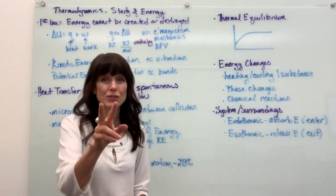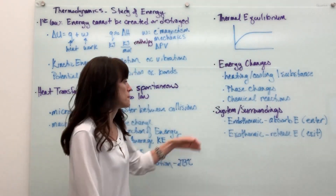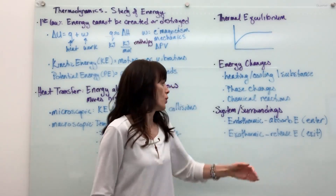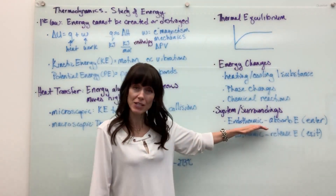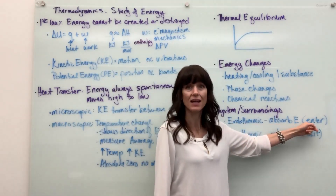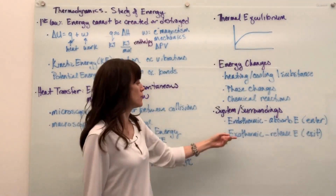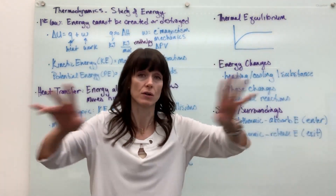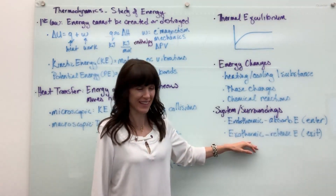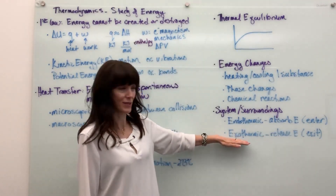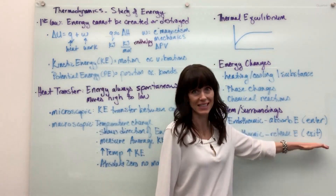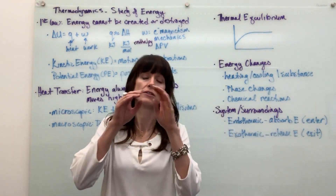We have two words for this. When energy is absorbed — taken in — we call that endothermic. A way to remember it: e-n, endothermic, think of 'enter.' If the energy is released and goes out to the surroundings, that would be exothermic — releasing energy. Look at the prefix: e-x, think of 'exit.' So exothermic: the energy exits.